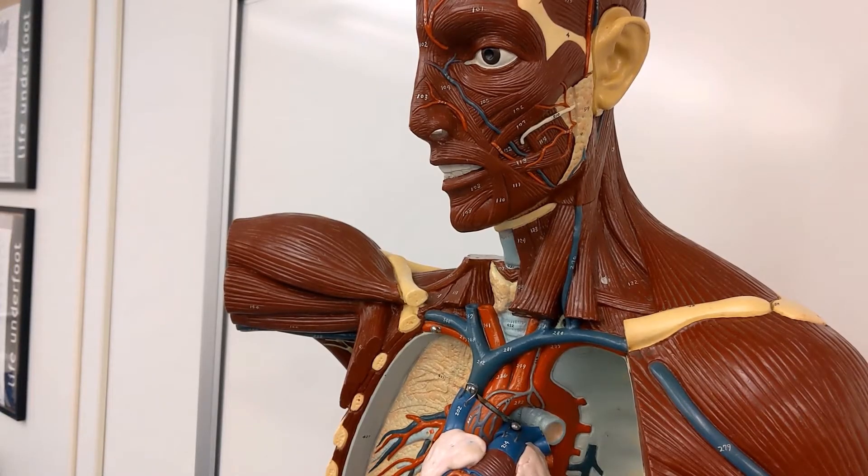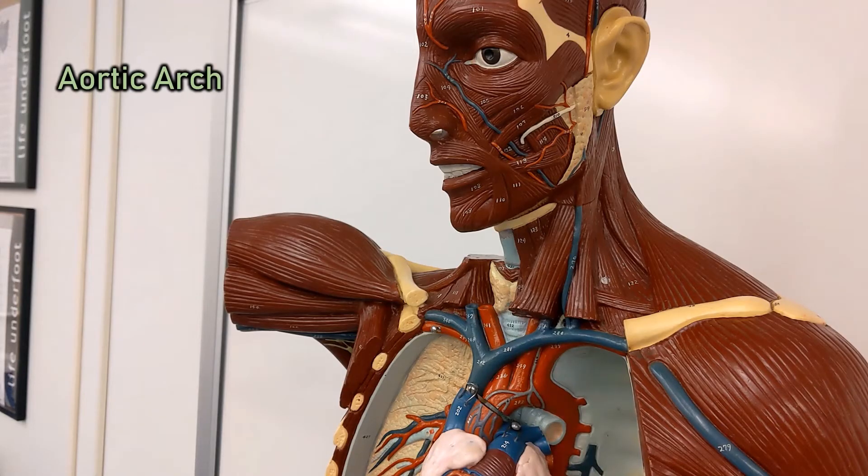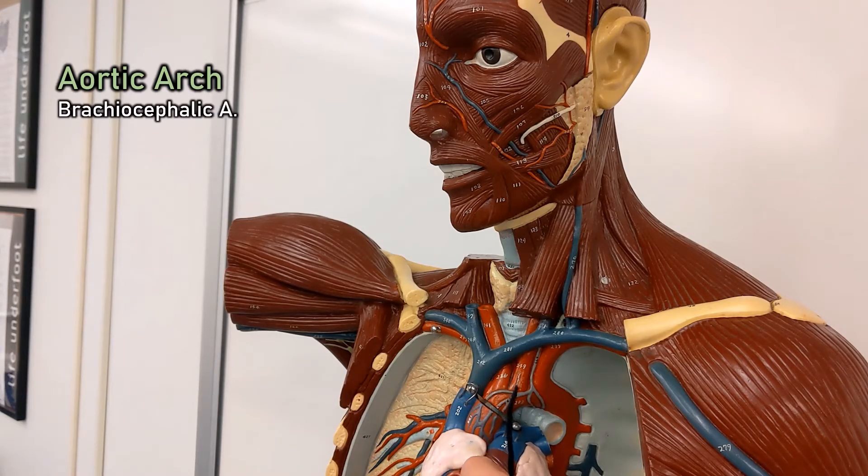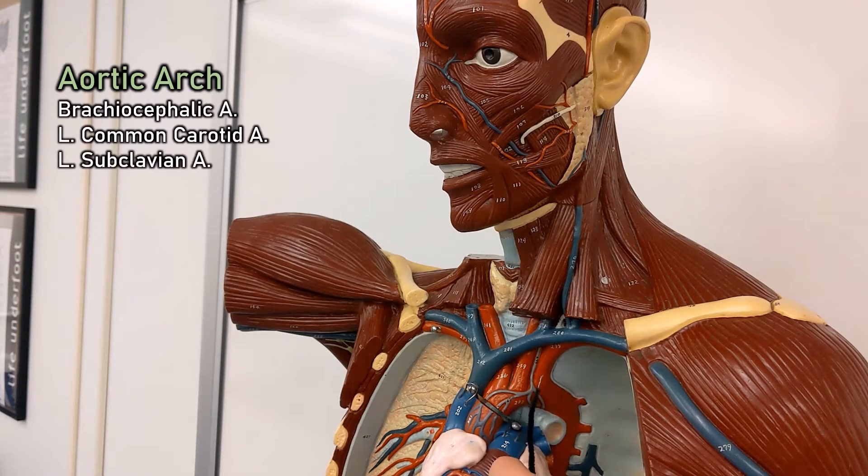All of the blood going up to the head and neck is coming off of the aortic arch. There are three branches of the aortic arch: the brachiocephalic artery, left common carotid artery, and left subclavian artery.